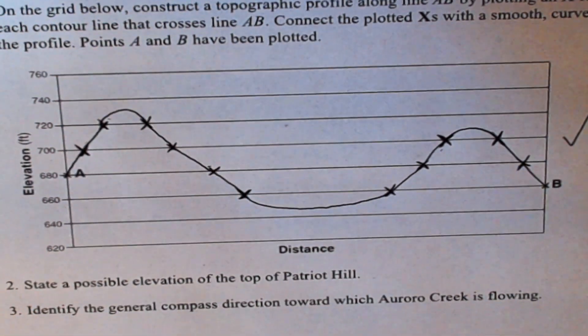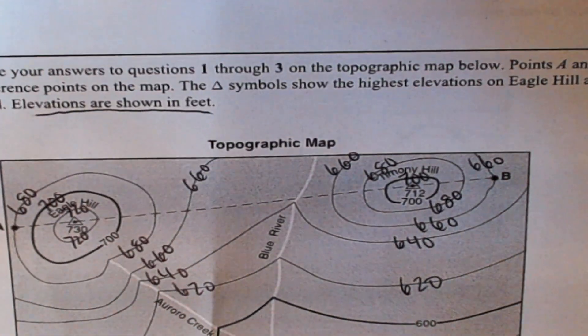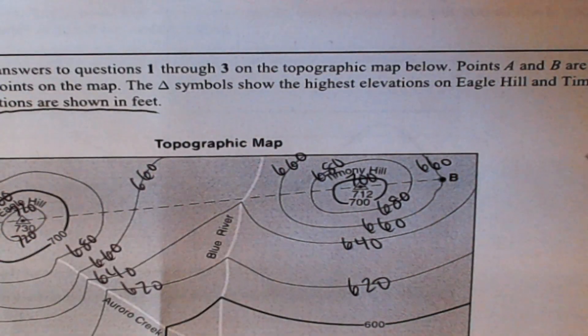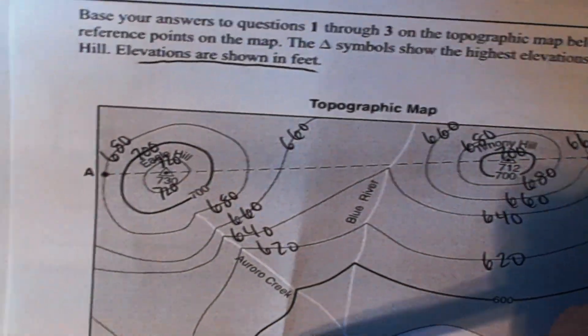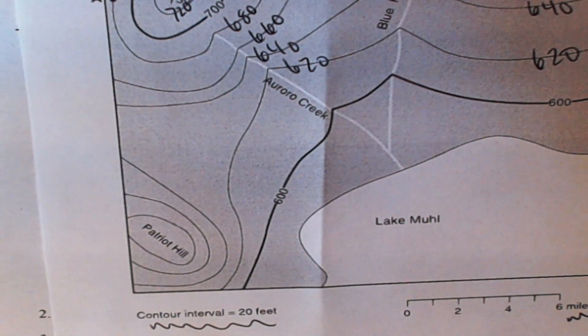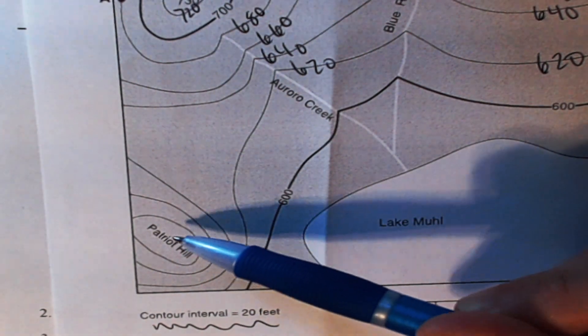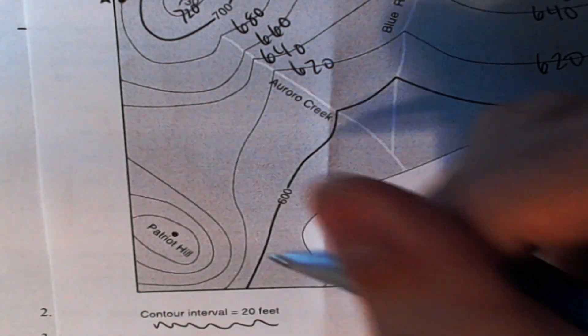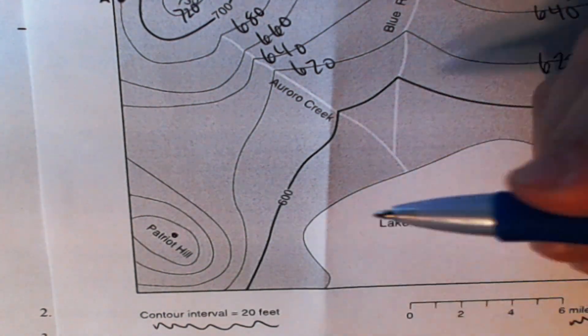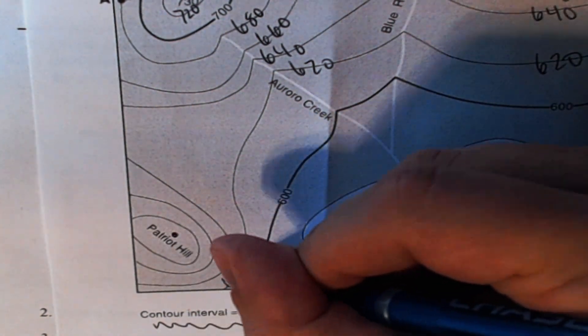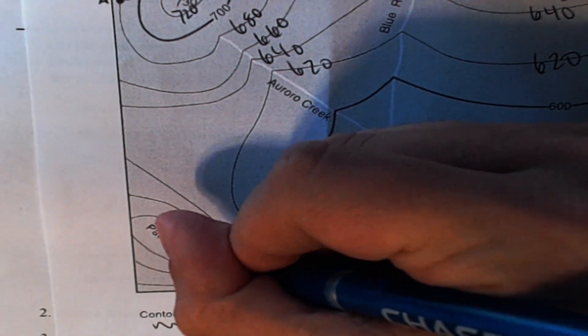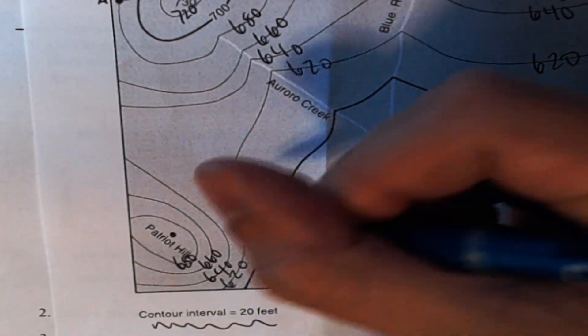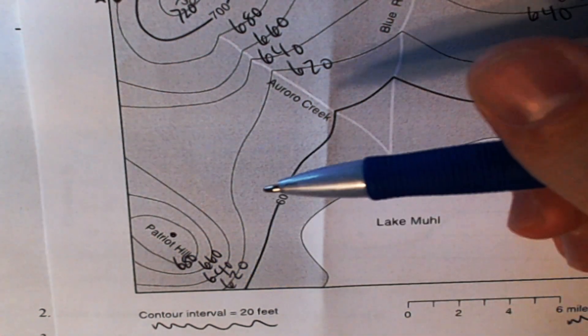Number two, state a possible elevation for the top of Patriot Hill. So I'm going to go back to Patriot Hill. Patriot Hill is actually neither of those, it's the one down here. Possible elevation for the top of this hill, like right in there. I'm going to first label all my contour lines. So this is 620, 640, 660, 680. So the way you figure out what that dot could be, you say to yourself, okay, what would the next contour line be if we were to draw one? So in this case, the next one would be 700, but it's not there.